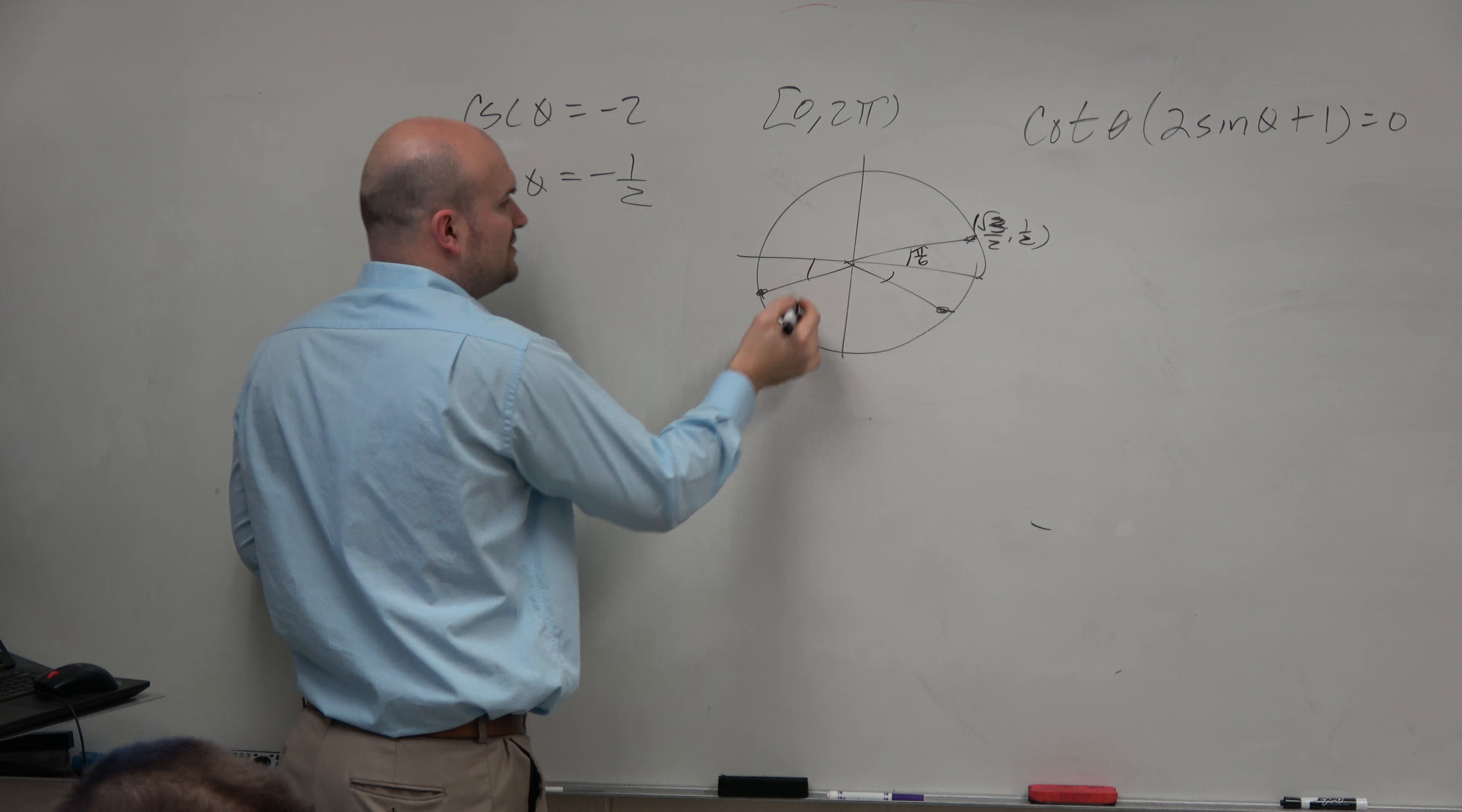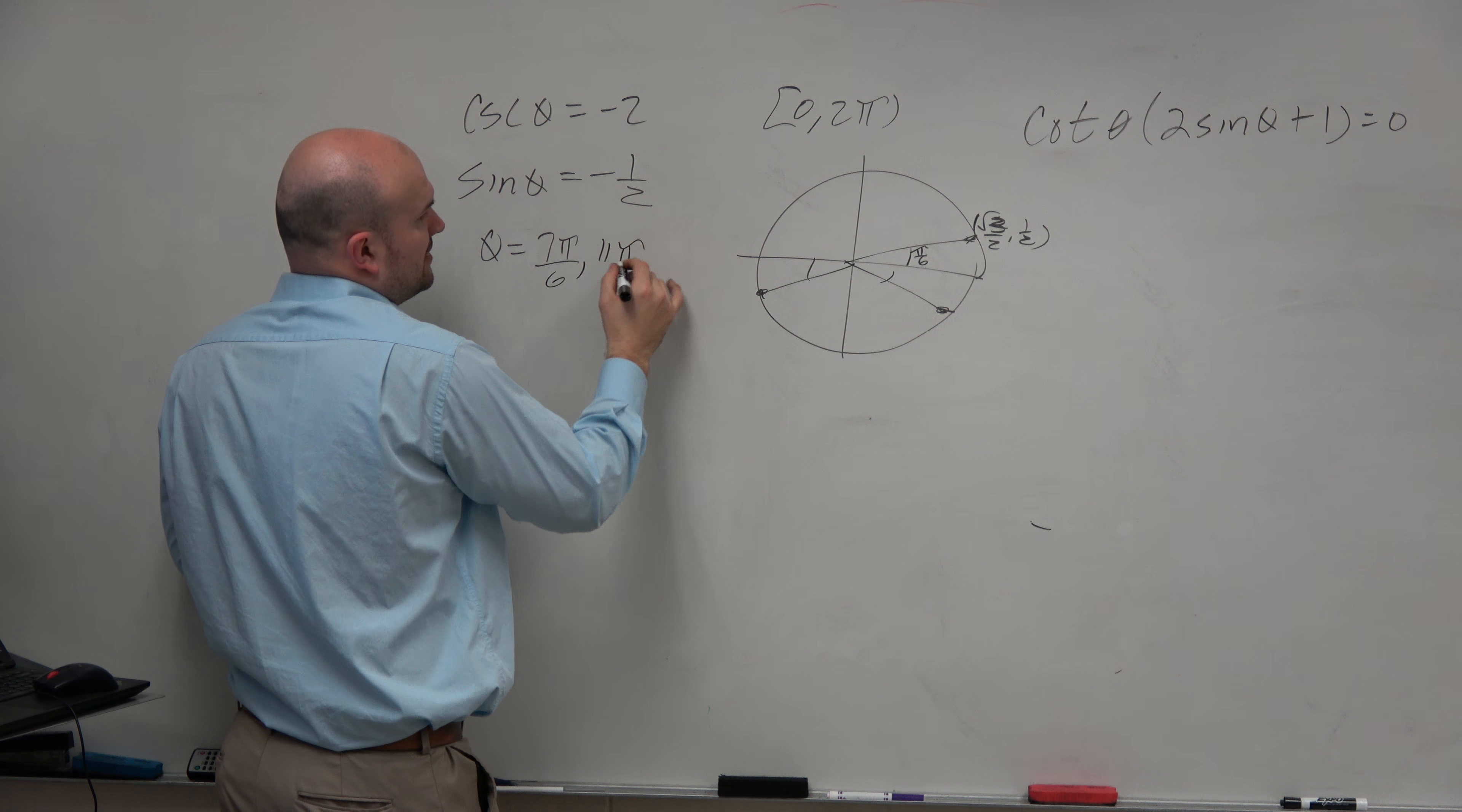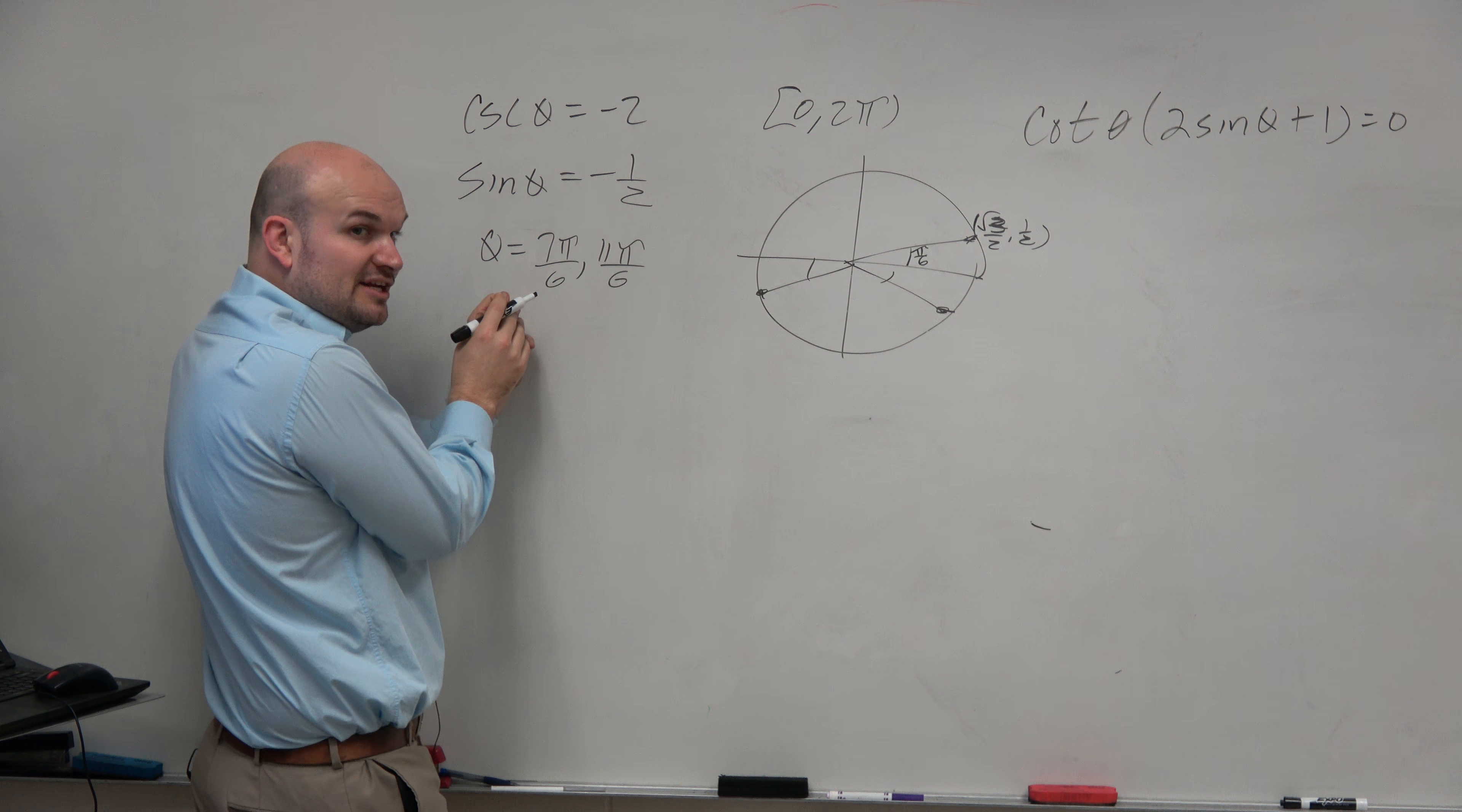So since these have the same reference angles, my angles are going to be 7 pi over 6 and 11 pi over 6. And again, what that means is these are the solutions. So you can plug these in, and that makes your identity true.